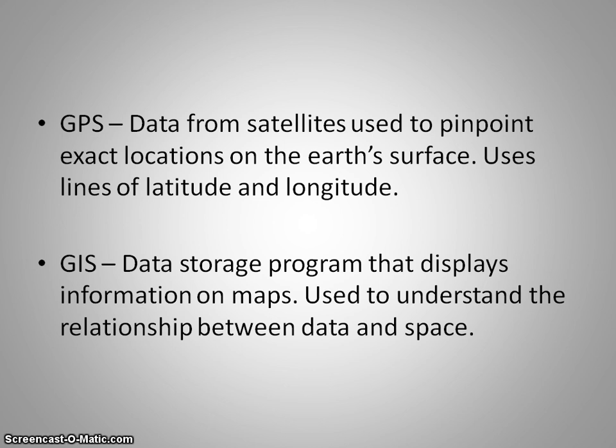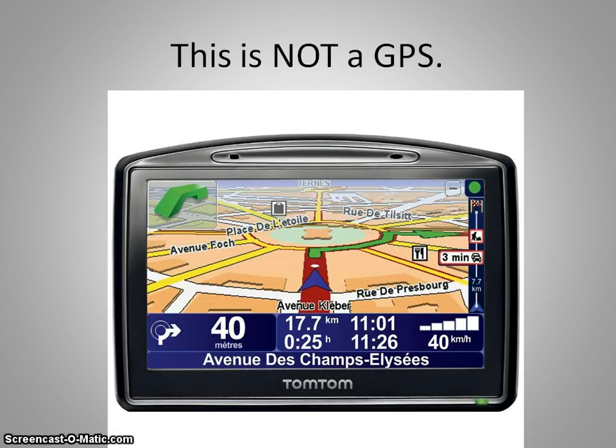So now we're going to look at a couple of things just to illustrate our point. So first of all, again, this is not, the TomTom that you see on the screen there is not a GPS. It's using GPS positions to give you directions from point A to point B on a map, and it'll help direct you and guide you, but it itself is not a GPS. It uses GPS, but it itself is not a GPS, a global positioning system.